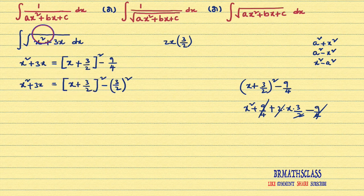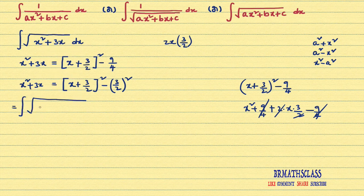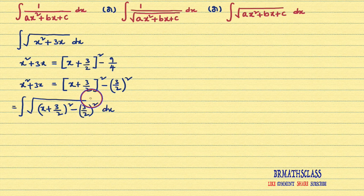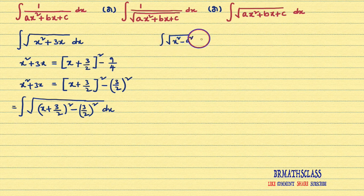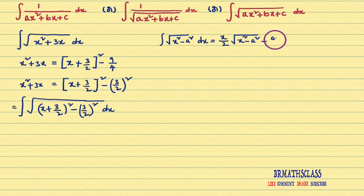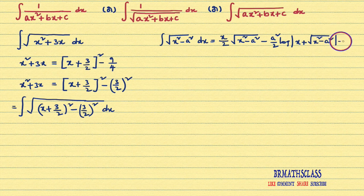So in this integral, in place of x² + 3x, we write this expression. That equals the integral of square root of (x + 3/2)² − (3/2)² dx. If you observe this integral, it is of the form integral of square root of x² − a² dx. We learned this formula in previous classes. That formula is: x/2 × √(x² − a²) − a²/2 × log|x + √(x² − a²)| + C.